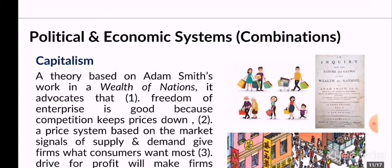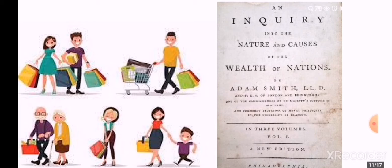The first one we have is capitalism. Capitalism was a theory based on Adam Smith's writing, The Wealth of Nations. The complete title is actually An Inquiry into the Nature and Causes of the Wealth of Nations. What he's trying to say in this book is that some nations are wealthy because of the kinds of economic structures and arrangements that they have. If countries follow these principles, then people are going to be happier, the nations are going to be wealthier, and this will be sustained over time.